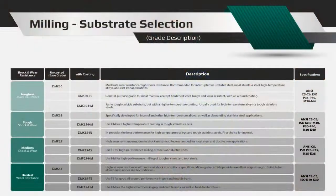As you look in your cutting tool catalog for a cutting edge type or carbide grade, the ISO material group is a critical part of how these choices will be made. Each material group has different machinability characteristics and the carbide cutting edges and grades are designed with this in mind.